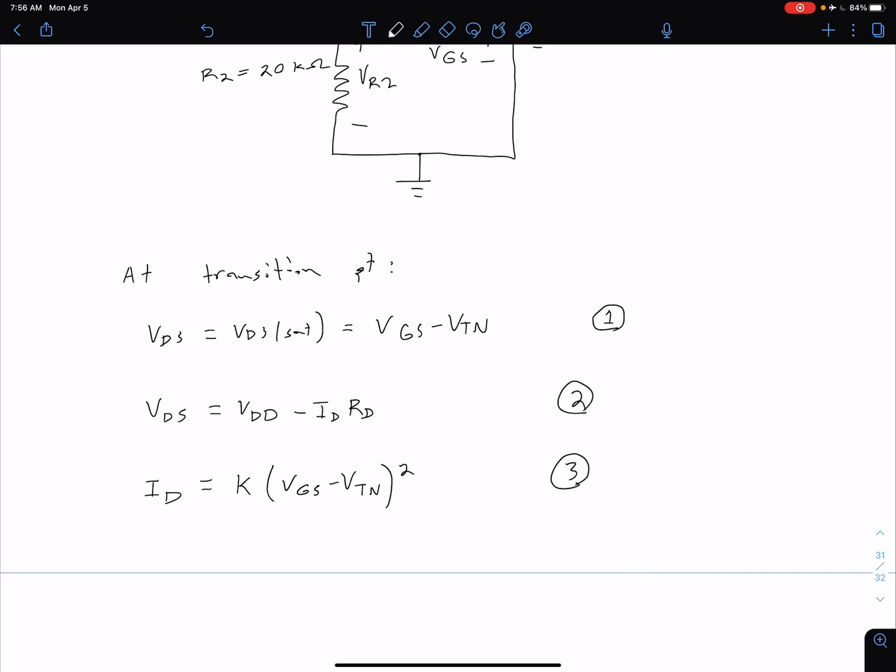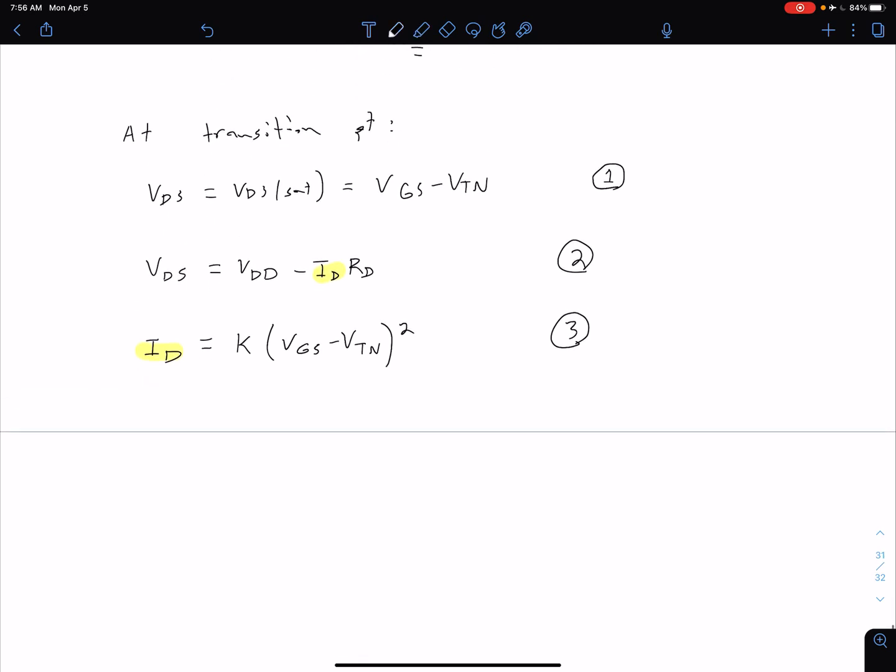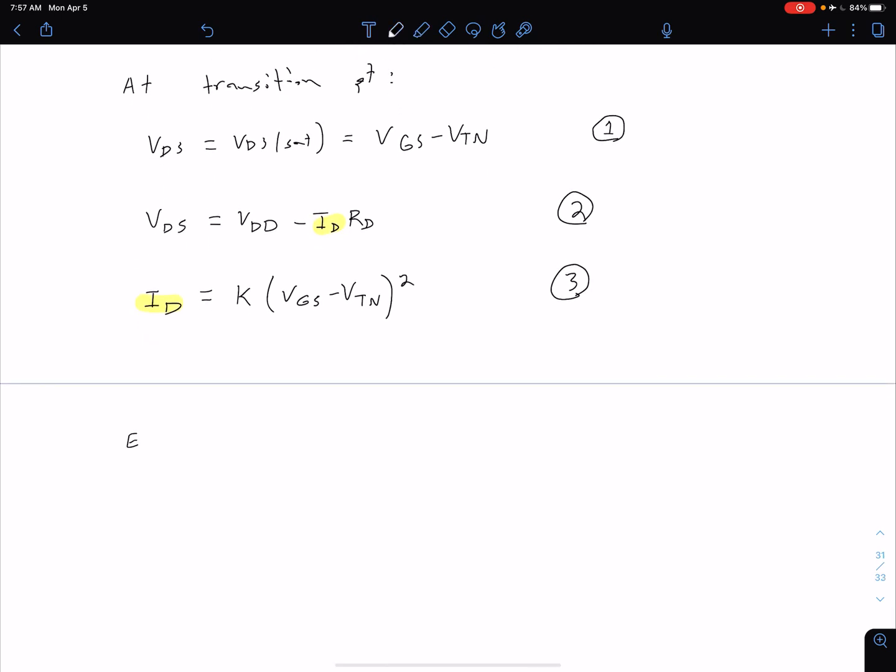So what we want to do now is we're going to equate equations one and two because these are both VDS. And then we're going to substitute our ID expression in for our ID here. So our game plan is we're going to equate one and two, and then we're going to substitute ID from three.